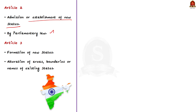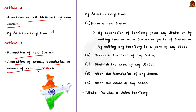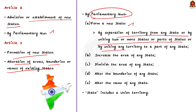Article 3 talks about: firstly, the formation of new states; and secondly, the alteration of areas, boundaries, or names of existing states. This can be done by parliamentary laws. Parliament may, by law, form new states by separation of territory from any state, or by uniting two or more states or parts of states, or by uniting a union territory to a part of any state. Parliament may also, by law, increase the area, diminish the area, alter the boundaries, or alter the name of any state. Note that in these five clauses — Article 3a to 3e — the word 'state' includes a union territory also.